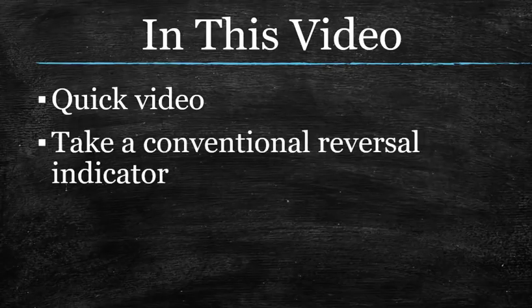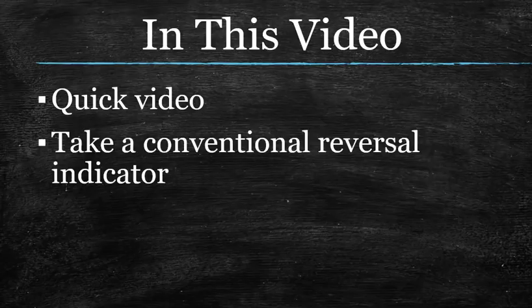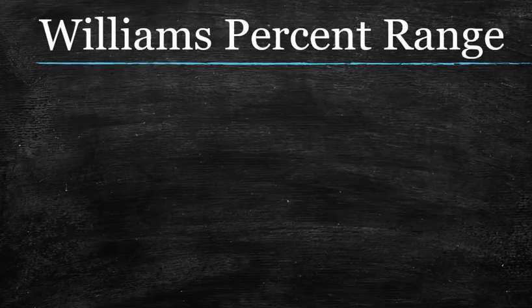All I'm going to show you is that I'm going to take a conventional indicator that is used for reversals, which is the Williams%R, and I'm going to actually make it usable. Reversal indicators really are not usable in our system, but I had found a way, a long time ago, to make this one pretty darn good. So let's jump into some basics real quick.